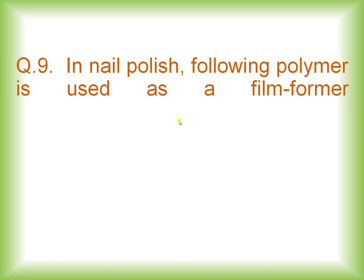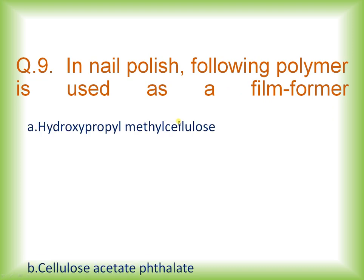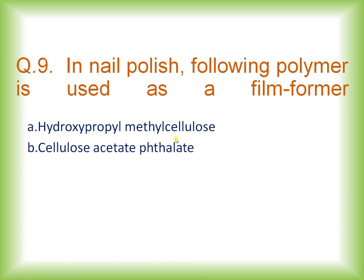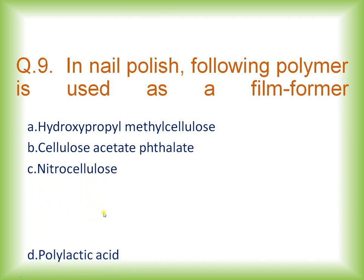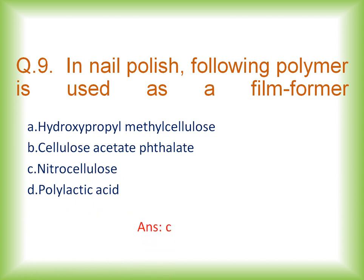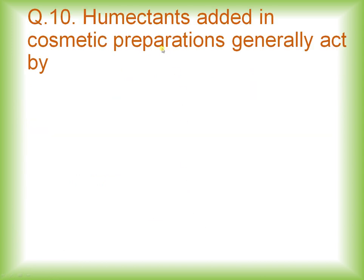Question number nine: in nail paint, which polymer is used as a film former when you apply nail polish? Options are hydroxypropyl methylcellulose, cellulose acetate phthalate, nitrocellulose, and polylactic acid. The right answer is option C: nitrocellulose is used as a film former in nail polish.